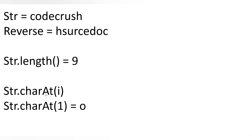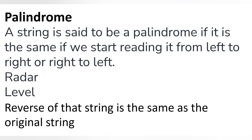The second method is `charAt()`, which returns the character at a particular index position. For example, `string.charAt(i)` — if the value of i is 1, it returns 'O', because at index 0 it is 'C', at index 1 it is 'O', at index 2 it is 'D', and so on. Now let's get the reverse of a string and then check whether it is a palindrome.